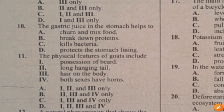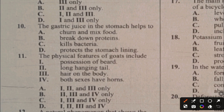Question 11. The physical features of goats include: I. Possession of beard, II. Long hanging tail, III. Hair on the body, IV. Both sexes have horns. Statement I is correct. Statement II is wrong because goats have shorter tails. Statements III and IV are correct — goats have hair on their bodies and both sexes have horns. The answer to question 11 is C.